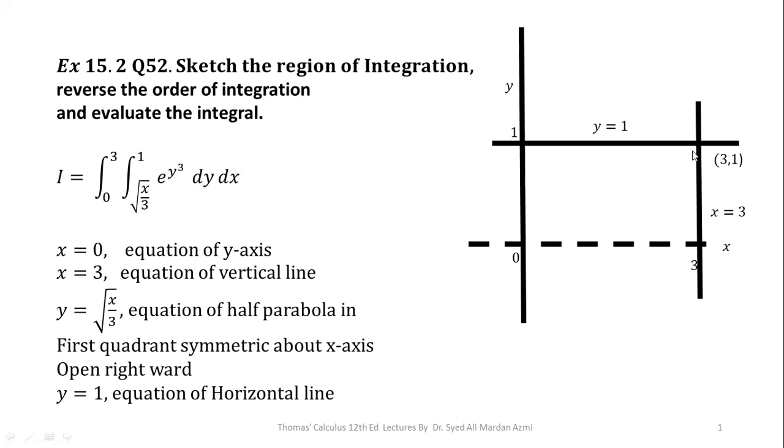And this point, their point of intersection will be (3,1). And this is our x equal to 0. Please note that y equal to 0 is not in our boundary. So we left it as dotted.